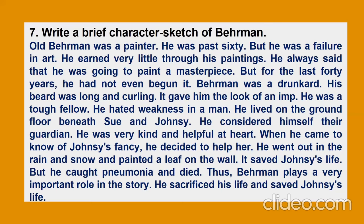Seventh five-marks question: Write a brief character sketch of Behrman. Old Behrman was a painter past 60 but a failure in art. He earned very little through his paintings. He always said he was going to paint a masterpiece, but for the last 40 years he had not even begun it. Behrman was a drunkard. His beard was long and curling, giving him the look of an imp. He was a tough fellow who hated weakness in a man. He lived on the ground floor beneath Sue and Johnsy and considered himself their guardian. He was very kind and helpful at heart. When he came to know of Johnsy's fancy, he decided to help her. He went out in the rain and snow and painted a leaf on the wall — it saved Johnsy's life, but he caught pneumonia and died. Thus Behrman plays a very vital role in the story, sacrificing his life and saving Johnsy's life.